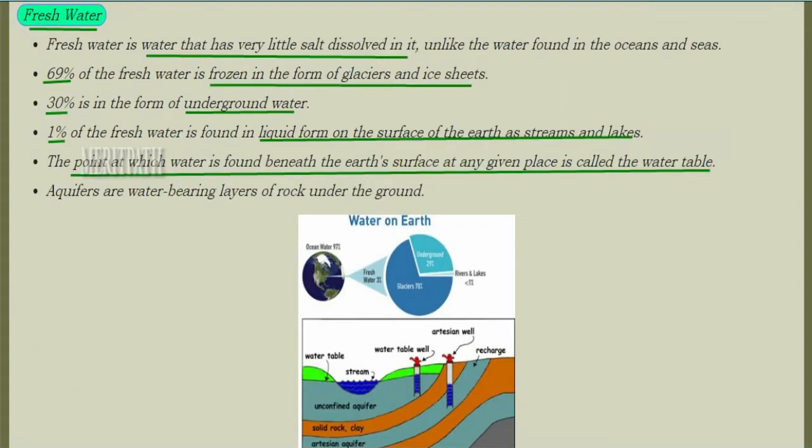Fresh water has very little salt, unlike salty ocean water. 60% of the fresh water is in the frozen form, in the form of glaciers and ice sheets. 30% of the fresh water is in the form of underground water. And 1% of the fresh water is in liquid form on the surface of the earth, such as in streams and lakes.